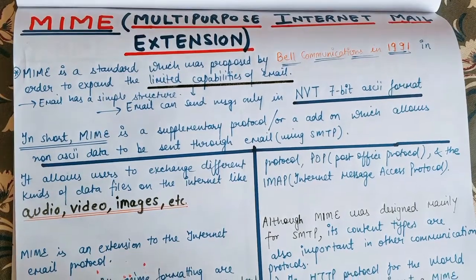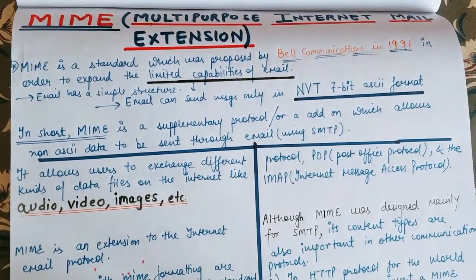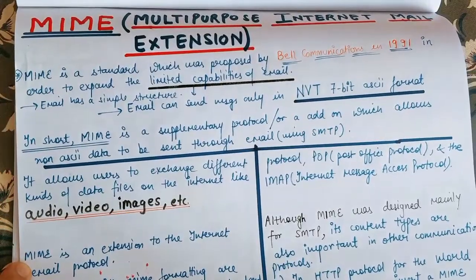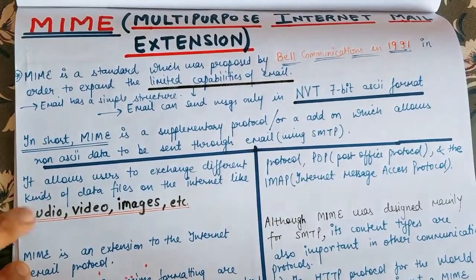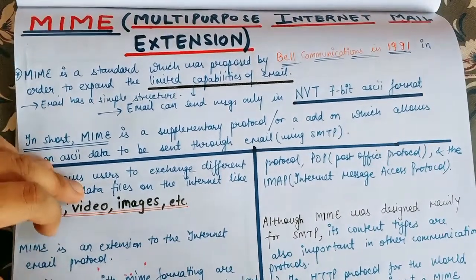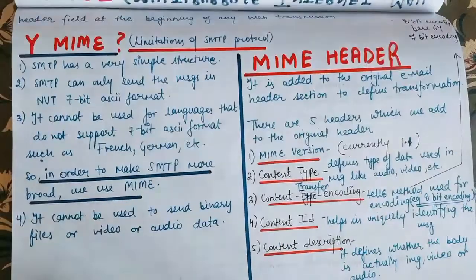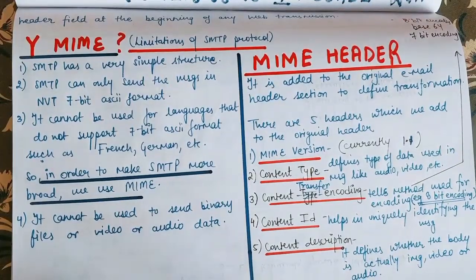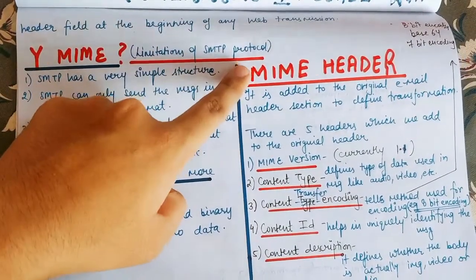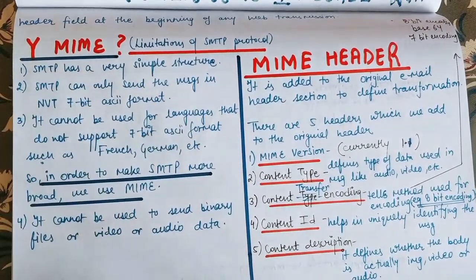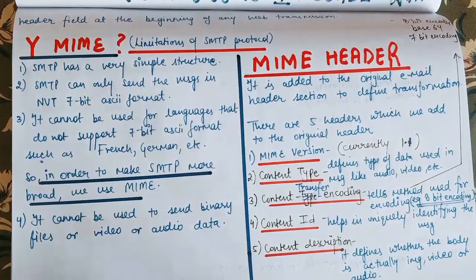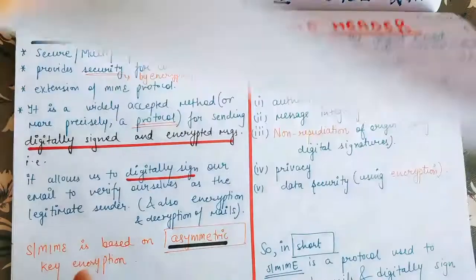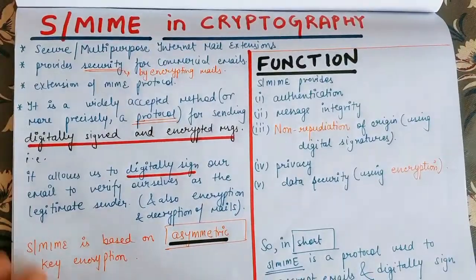That is the reason MIME protocol was introduced. Using this MIME protocol, if we have data which is not in NVT 7-bit ASCII format, we were able to send it over the internet through email. We have also discussed what were the limitations of SMTP protocol and that is why MIME protocol was needed.